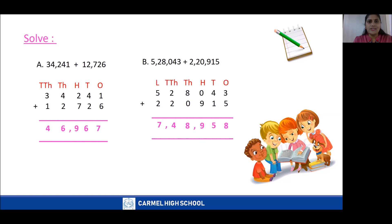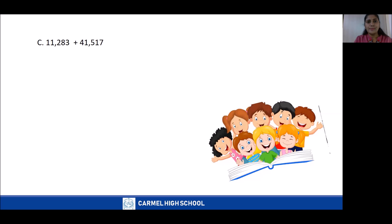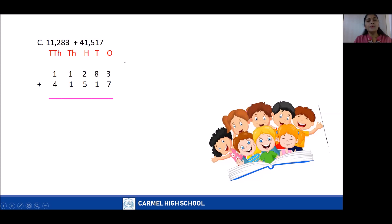Now we will move on to question C. Note the question in your book, arrange the numbers column-wise according to their places, and then add. Let's add from the one's place: 3 plus 7 is 10. I get 10. Can we write 10 here?